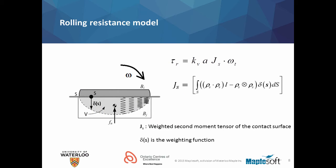For this reason, it gives rise to what is known as the rolling resistance. If a body is undergoing relative angular rotation with respect to the other body, the rolling resistance can be expressed in terms of kV, A, Js, and omega t. Js is the weighted second moment tensor of the contact surface, where the weighting functions are the deflections at every point on it.